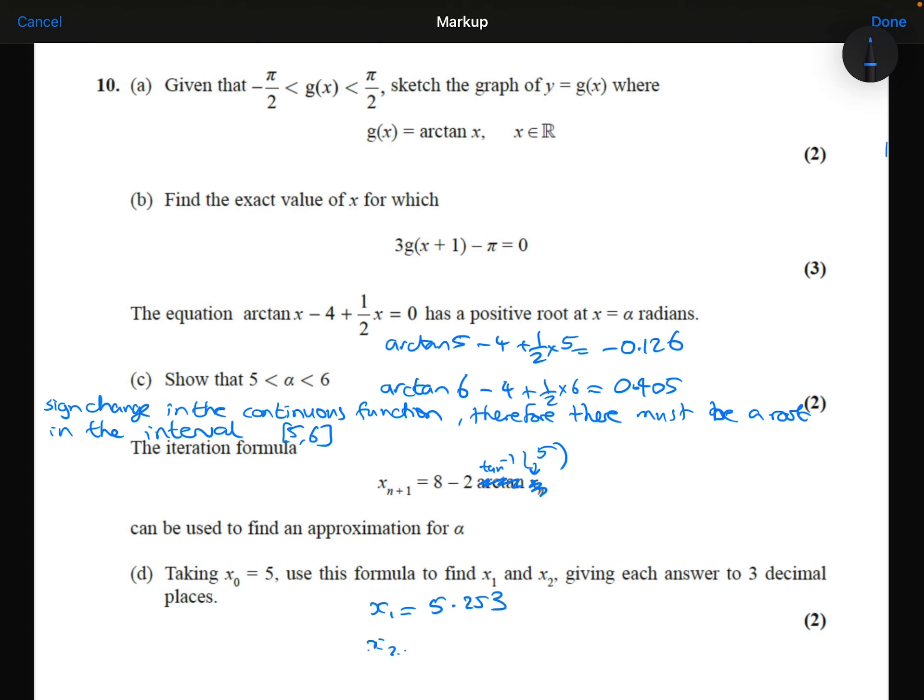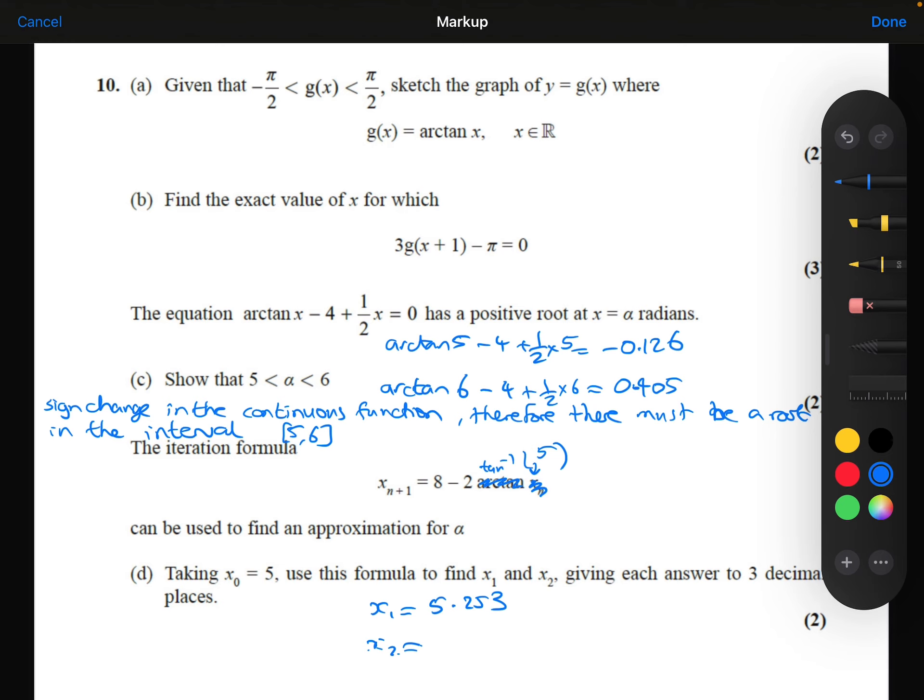To find x2, I am now going to do the similar thing, but instead of substituting 5, I'm going to use the answer. So 8 minus 2 times tan inverse of the answer, or the 5.253, and it's going to give me x2 is 5.235 to three decimal places.